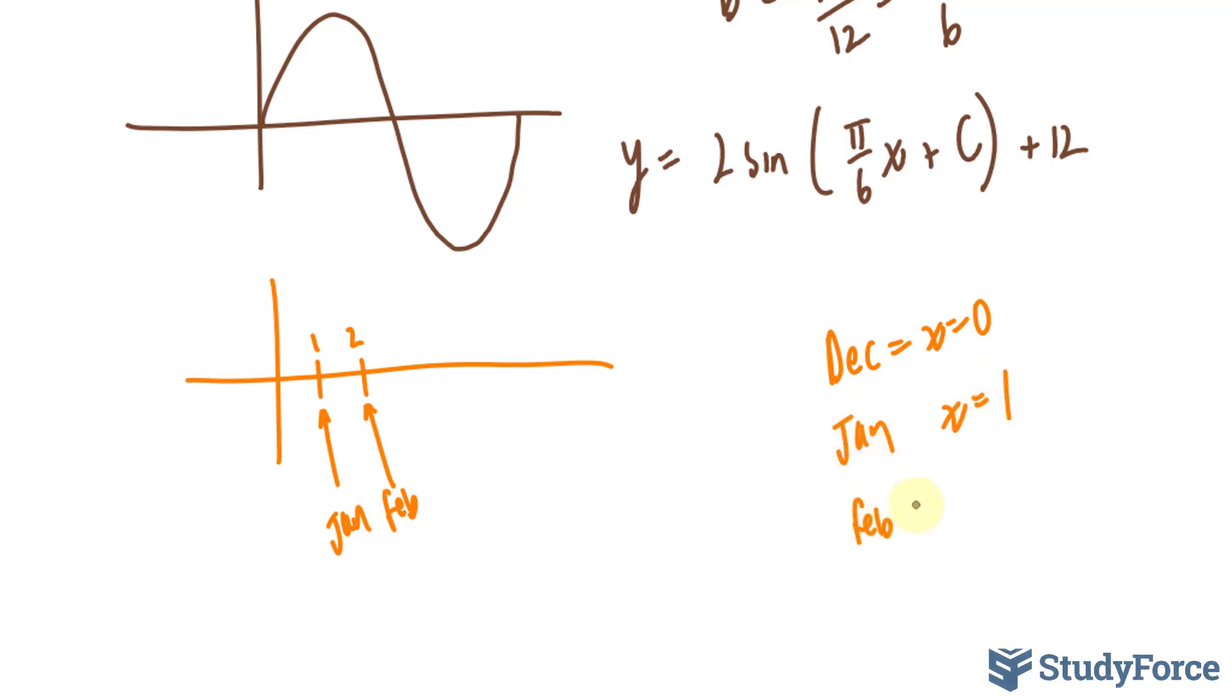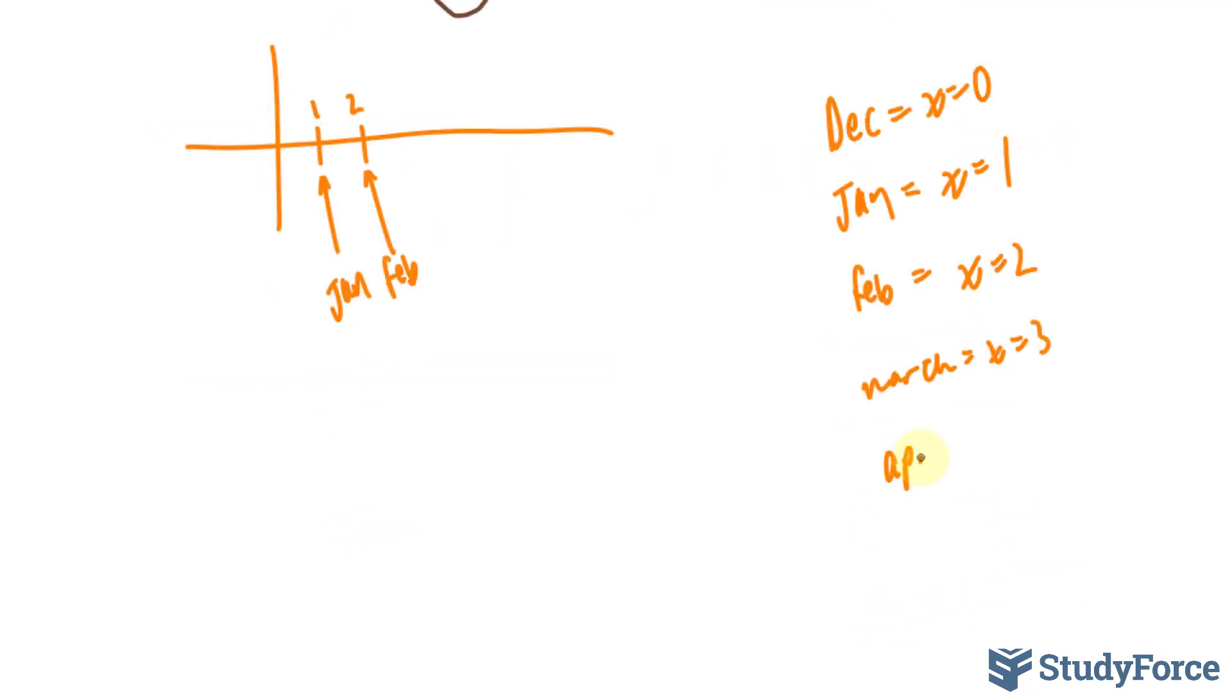February will be x = 2. March is x = 3. Then comes April, May, and June, where it reaches its maximum.